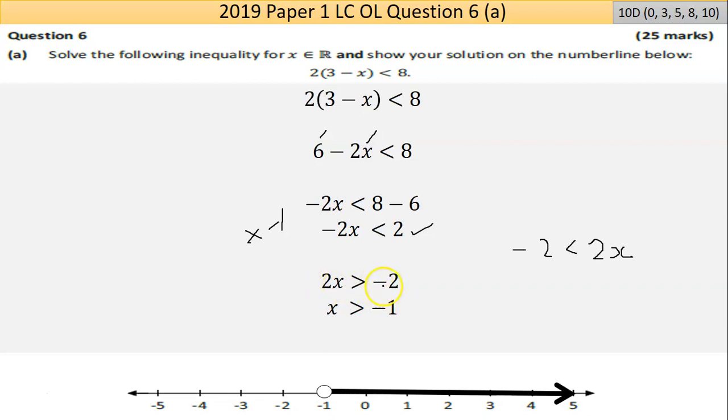So 2x > -2 means two times some number gives negative two, so the number must be negative one. Or I could bring the two across - it was multiplied on the left, becomes divided on the right - and end up with x > -1. Now I need to plot that on the number line. We're looking at x is greater than negative one - it's every number bigger than negative one. It doesn't say equal to negative one, so we draw an open circle at -1, then fill in a heavy line going right with an arrow because it's going on to infinity and beyond. That's part (a).